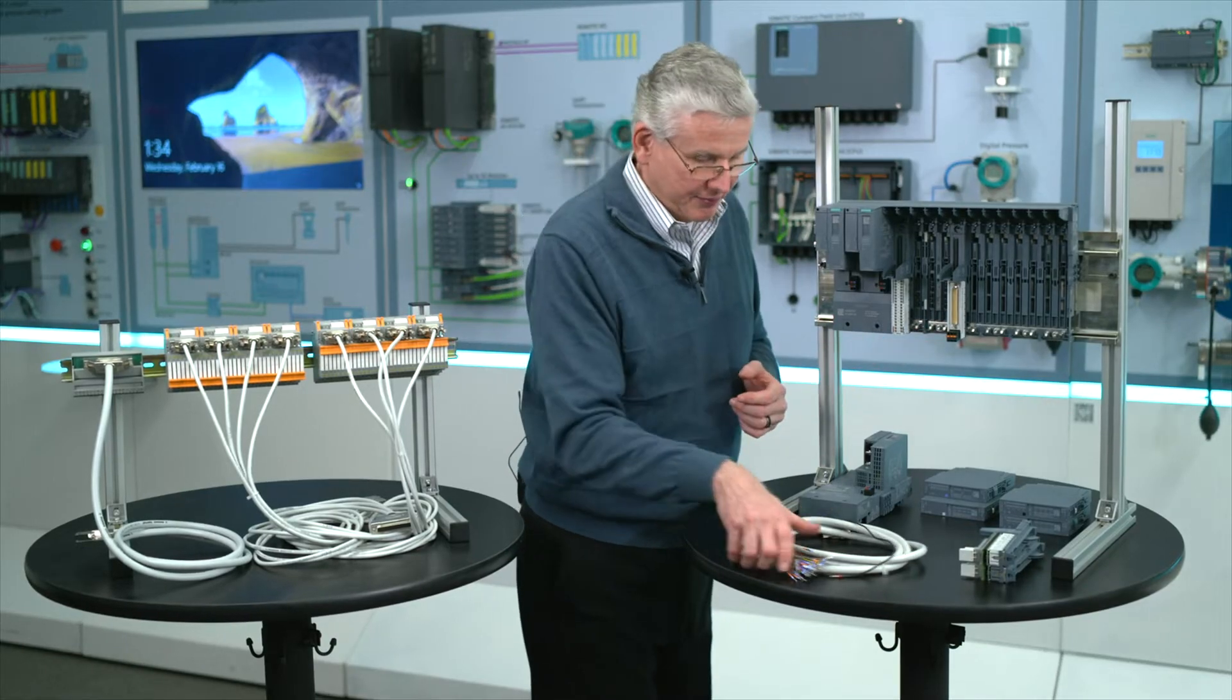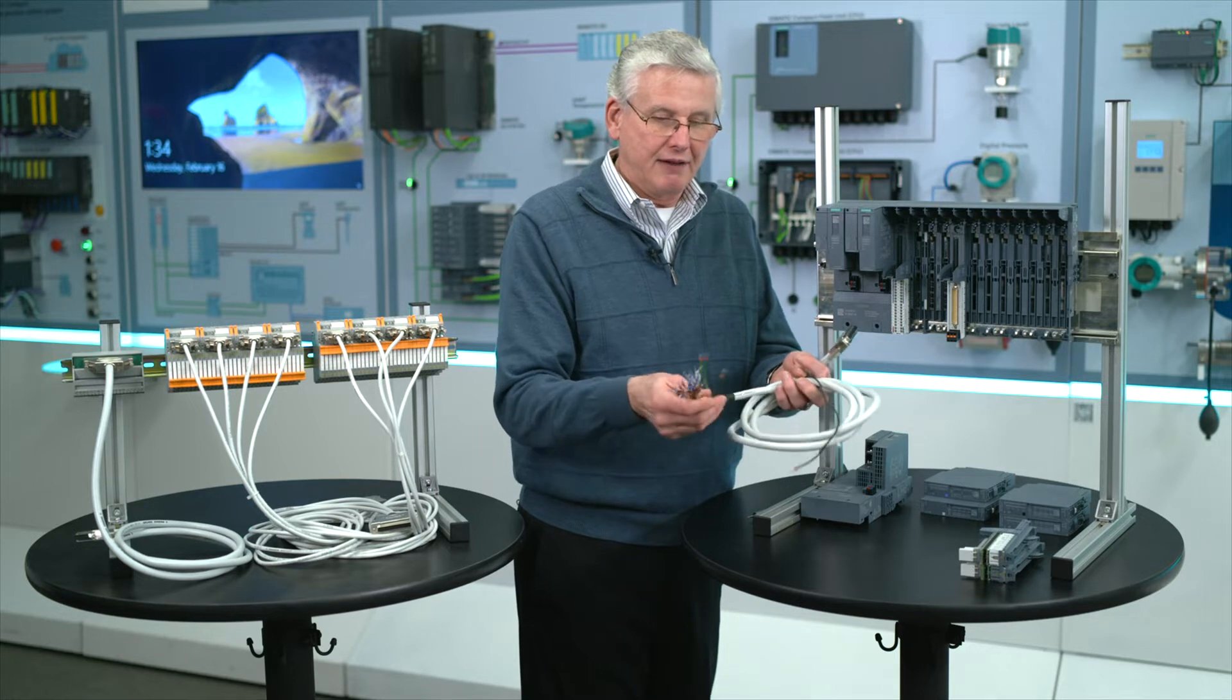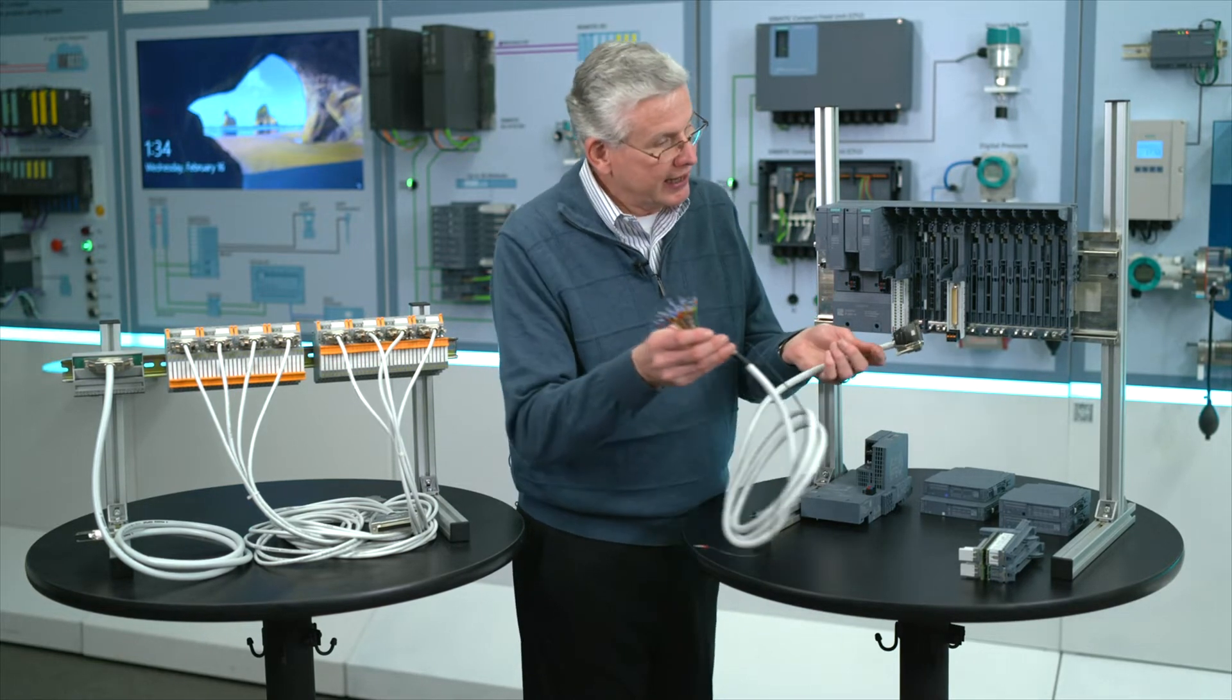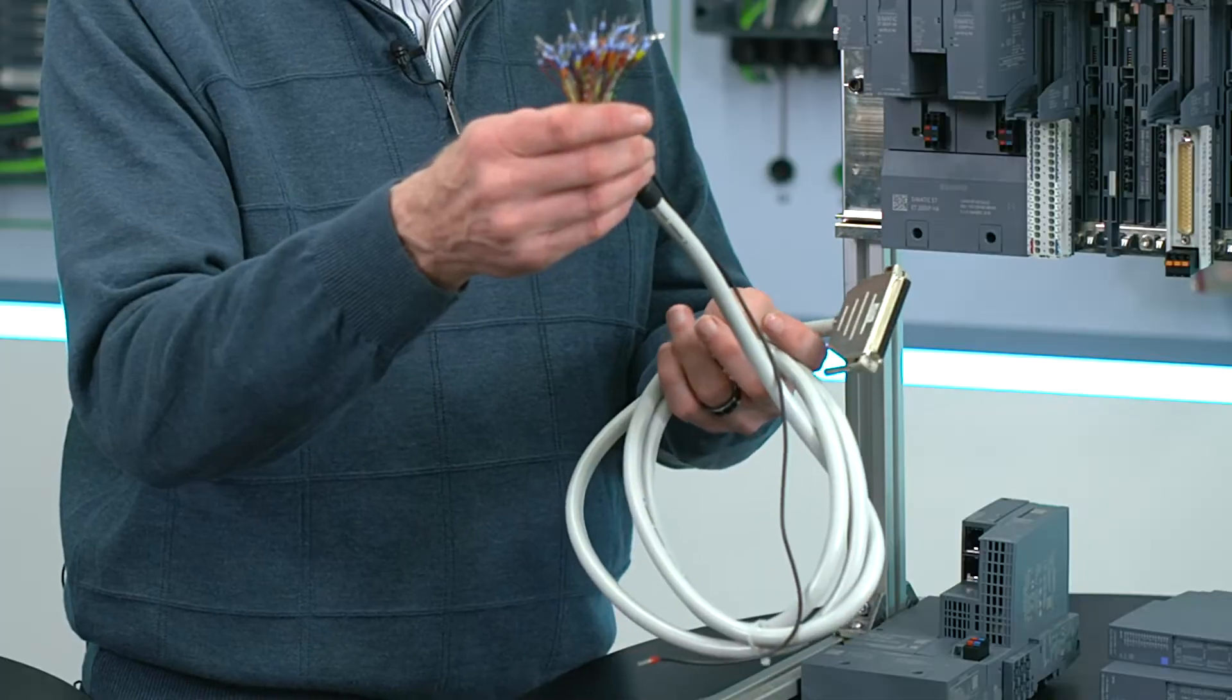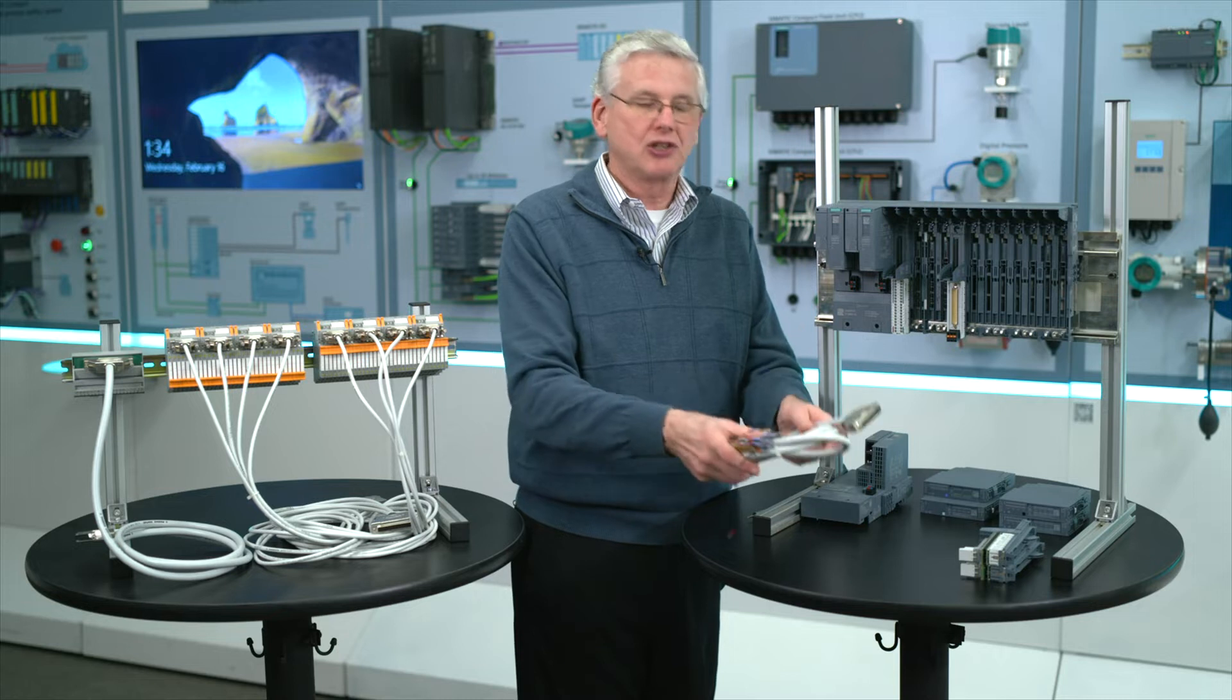Now, the D-sub, as I mentioned before, we've got flying lead cables. So we can connect this straight in here, and then we can take the flying leads, various length cables, and we can go to whatever type of termination that you're after.